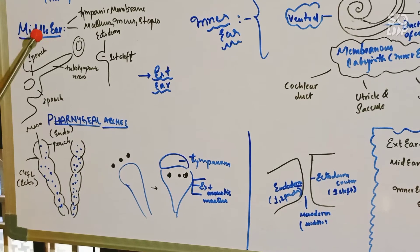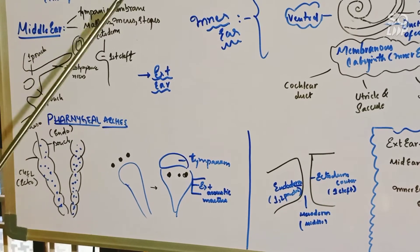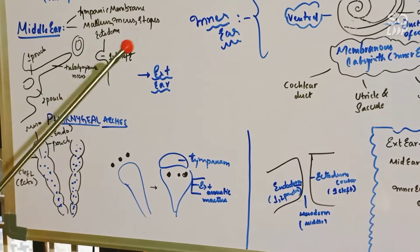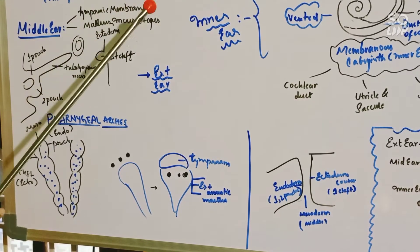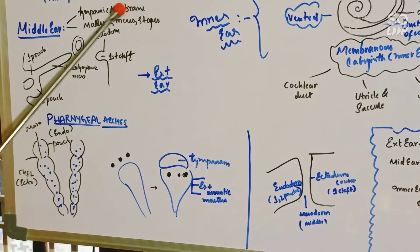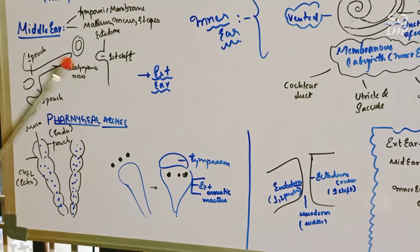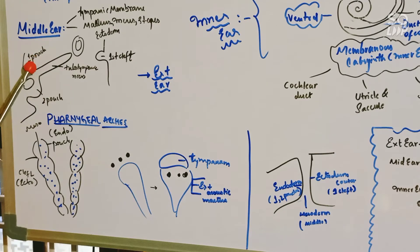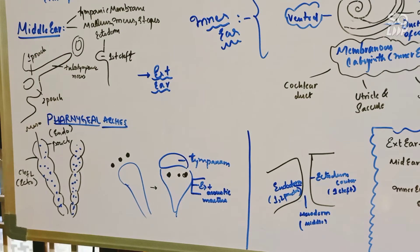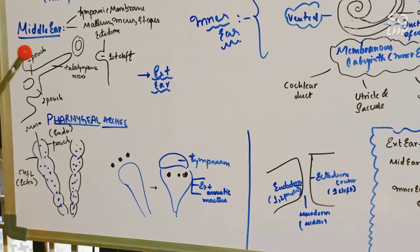Now let us see the middle ear. The middle ear has the tympanic membrane and three bones: malleus, incus, and stapes. These are the first bones formed in our body. In the middle ear, there is a tubo-tympanic recess, which is formed by the first pouch and second pouch, which are of endodermal origin, which we can learn in the pharyngeal arches.